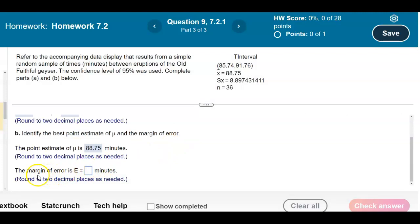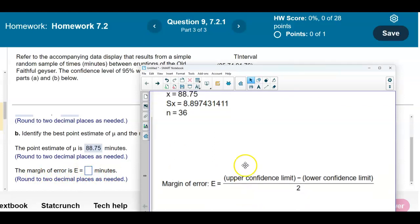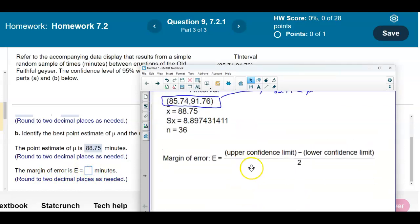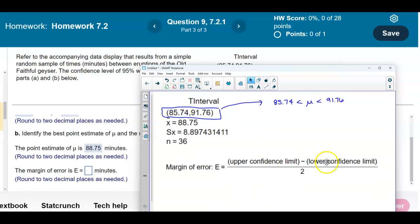Now the question says to solve for the margin of error. How do we find the margin of error? We're going to need the following formula: to find the margin of error, we take the upper confidence limit and subtract the lower confidence limit and then divide it by 2.